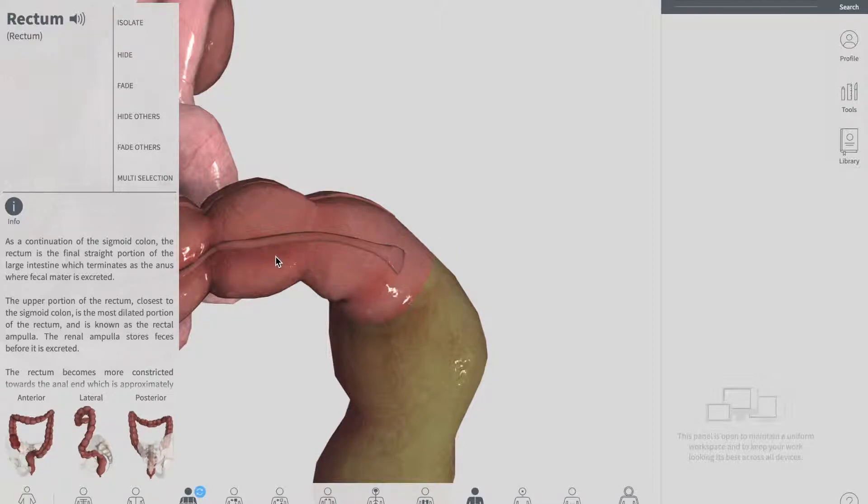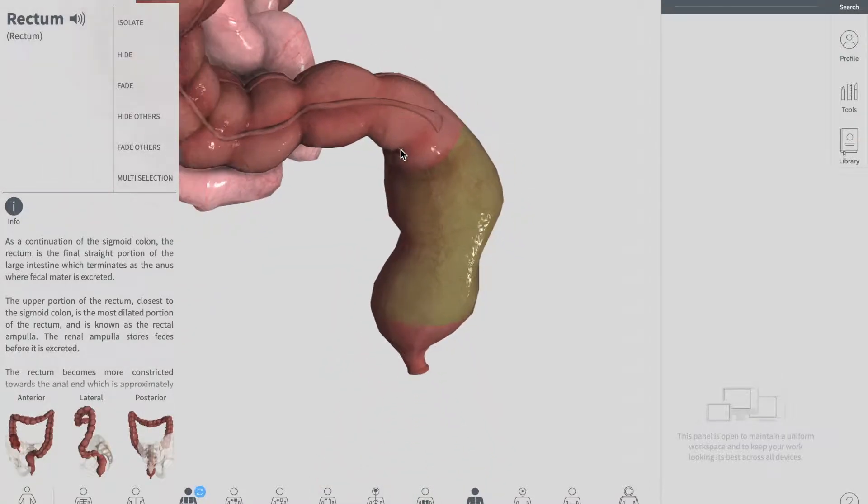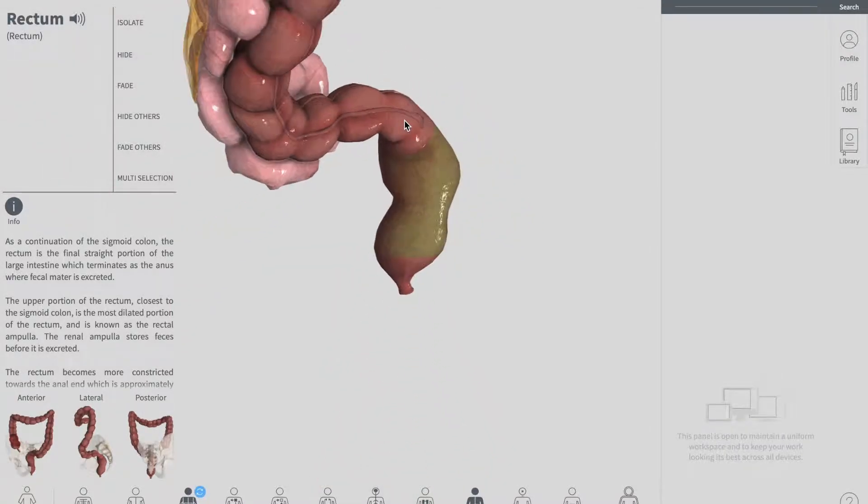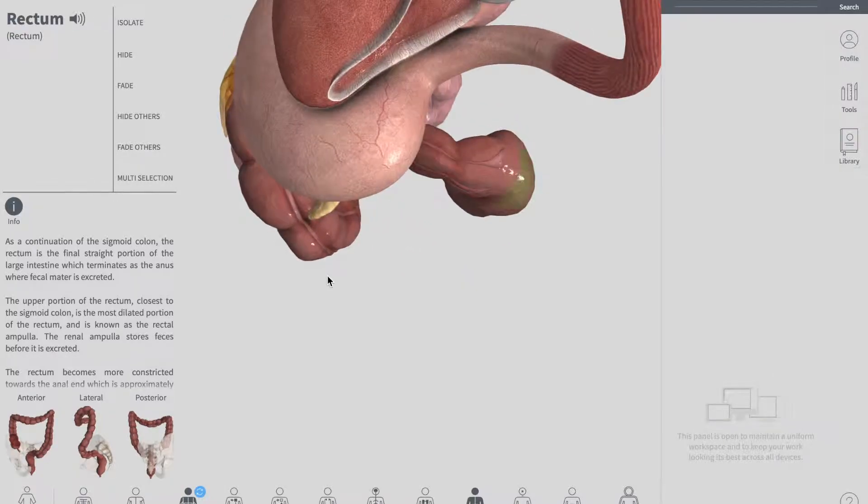This turn is called the sacral flexor, which is actually an anterior-posterior curve with concavity anteriorly. Let me put the picture upside down.